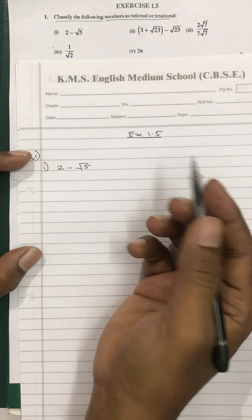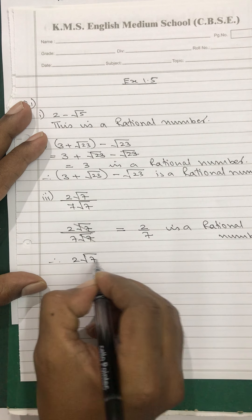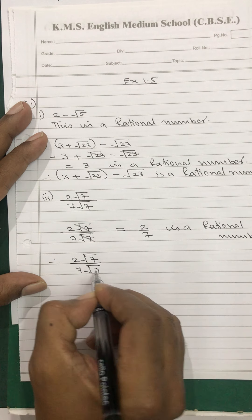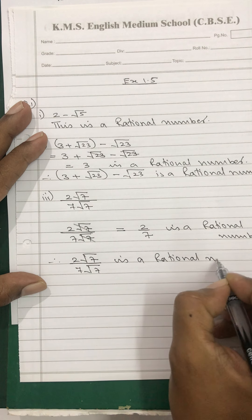Coming to the third one: 2 root 7 upon 7 root 7. Here, root 7 and root 7 will get cancelled, and what you get is 2 upon 7. So this is a rational number. Therefore, 2 root 7 upon 7 root 7 is a rational number.